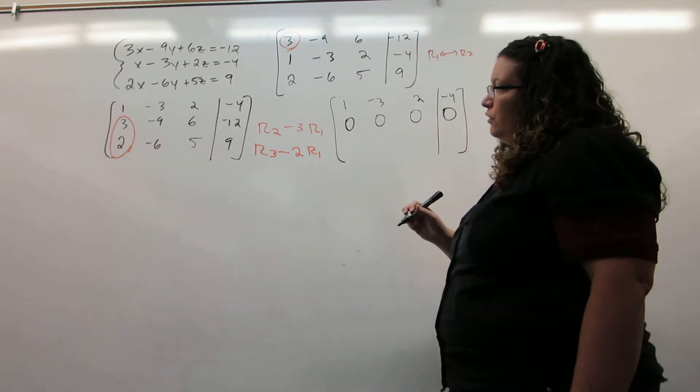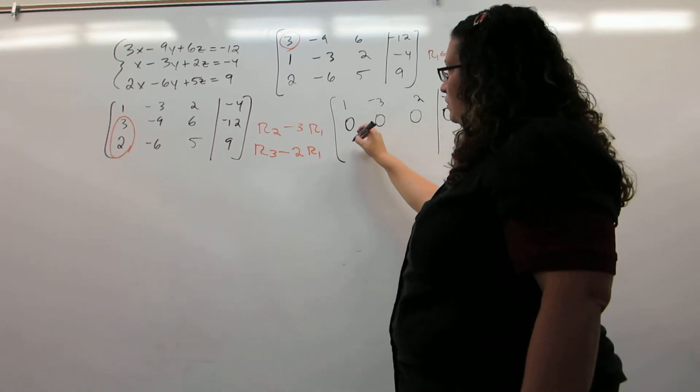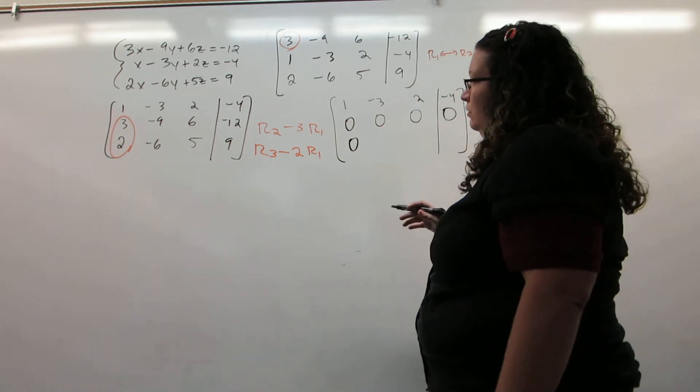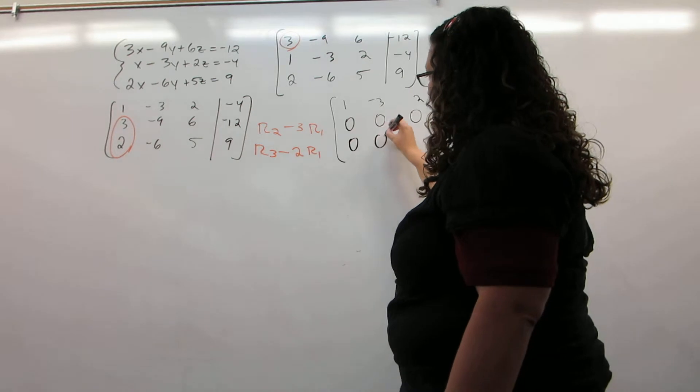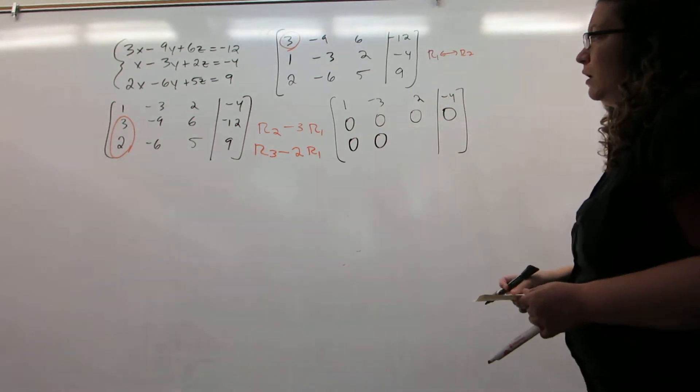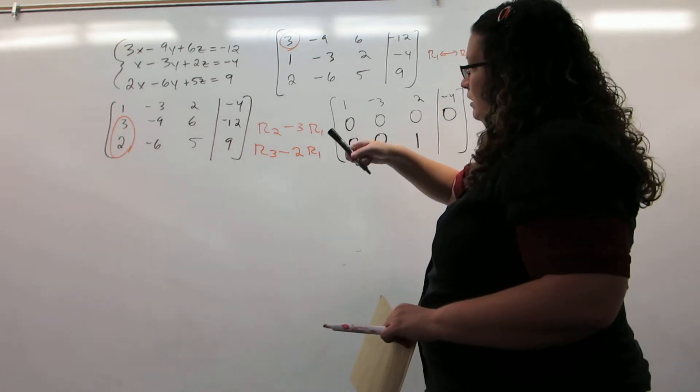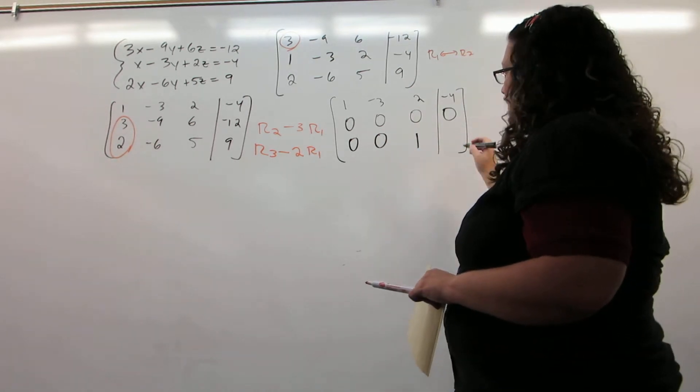For our third row, we have 2 minus 2 times 1, negative 6 minus 2 times minus 3, 5 minus 2 times 2, and 9 minus 2 times negative 4.